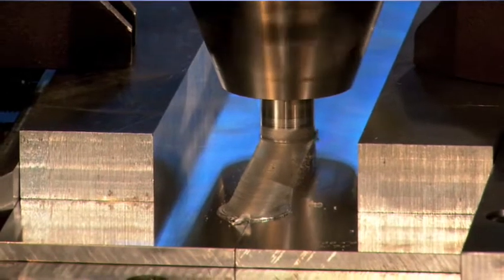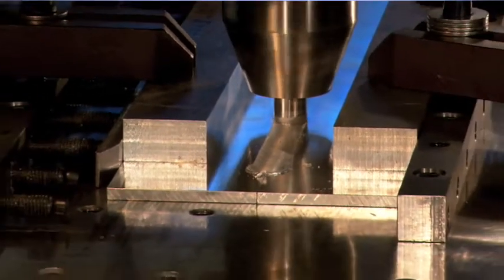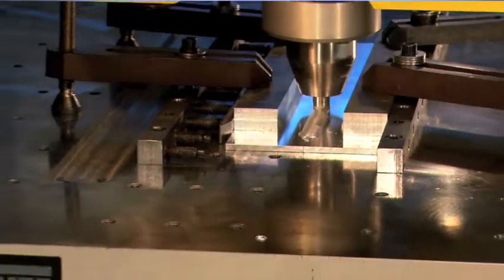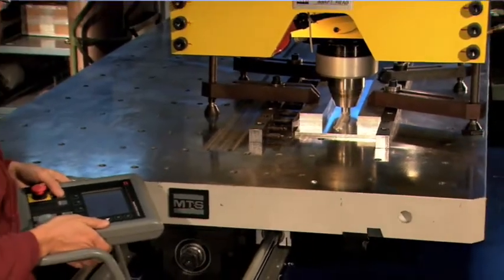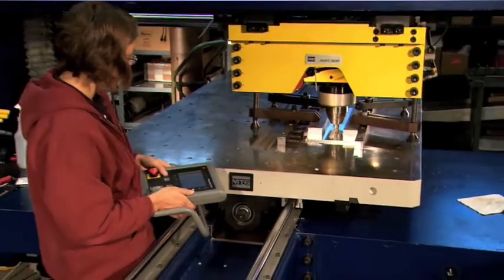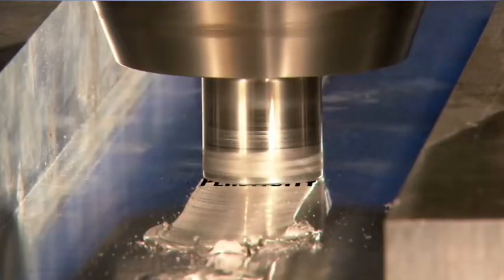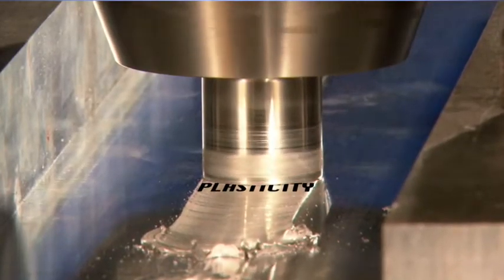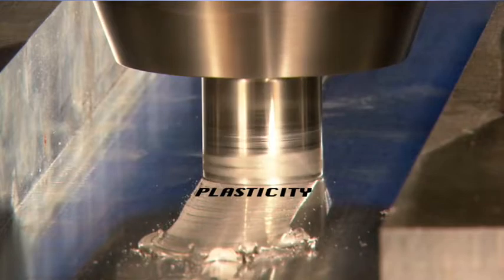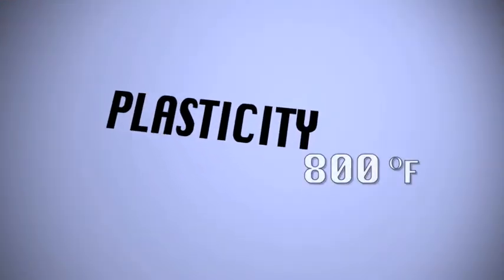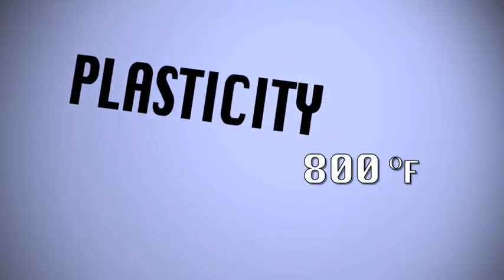So the friction causes the heat. The faster the pin tool rotates and the faster the traverse, the more friction and thus more heat. The heat softens the metal, but it doesn't melt it. This state where the metal is soft but not liquefied is known as plasticity. This happens at about 800 degrees Fahrenheit for most metals.